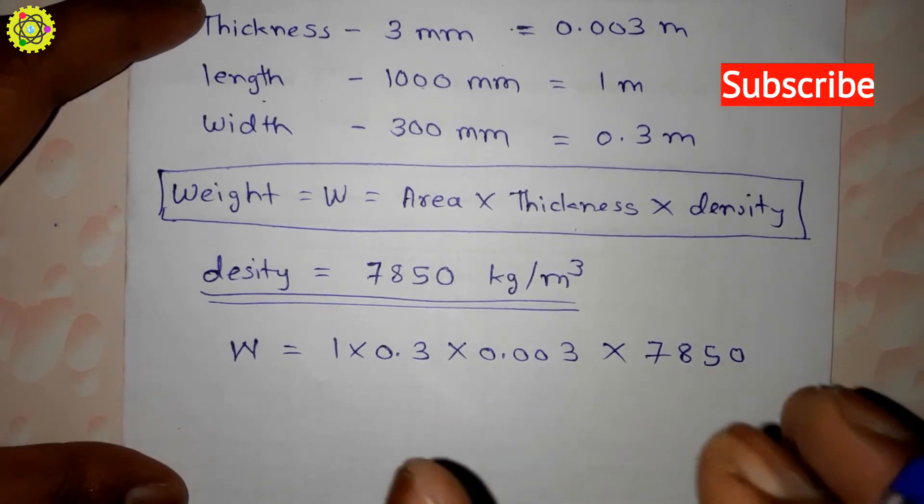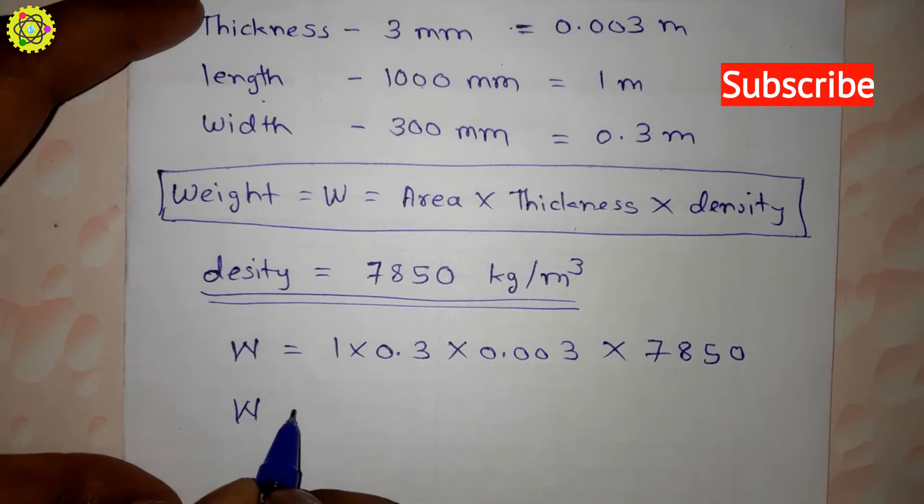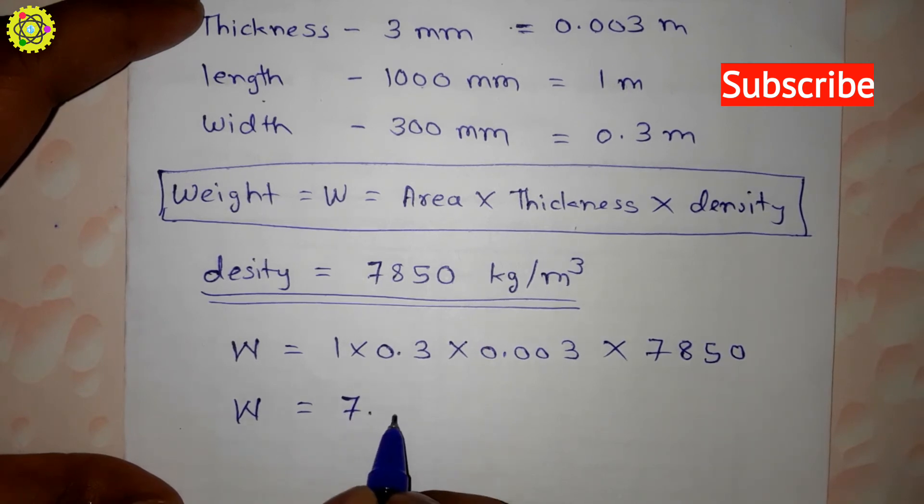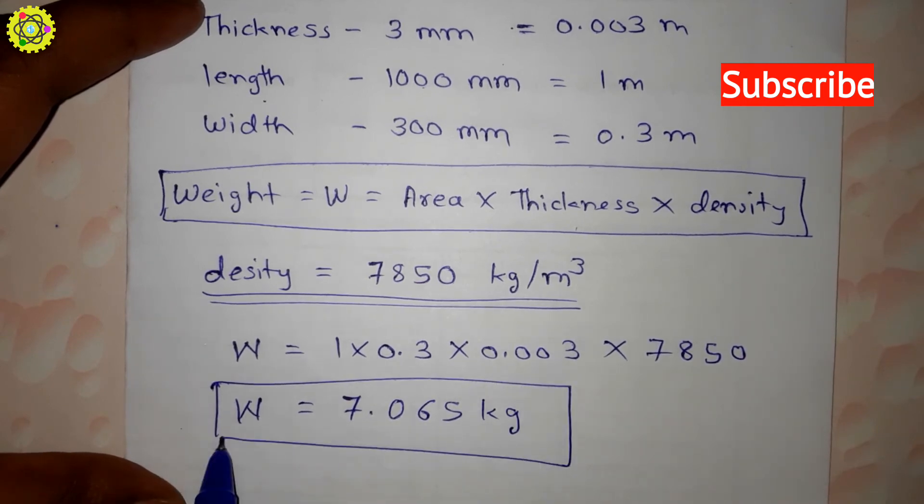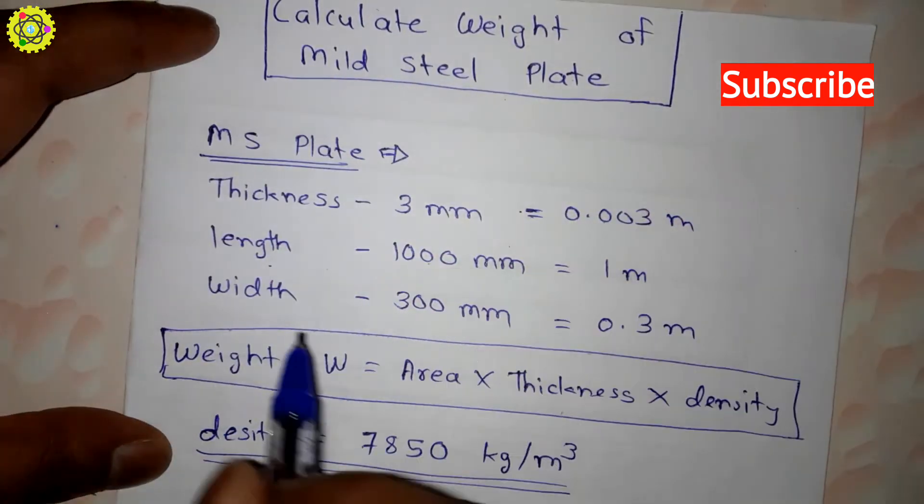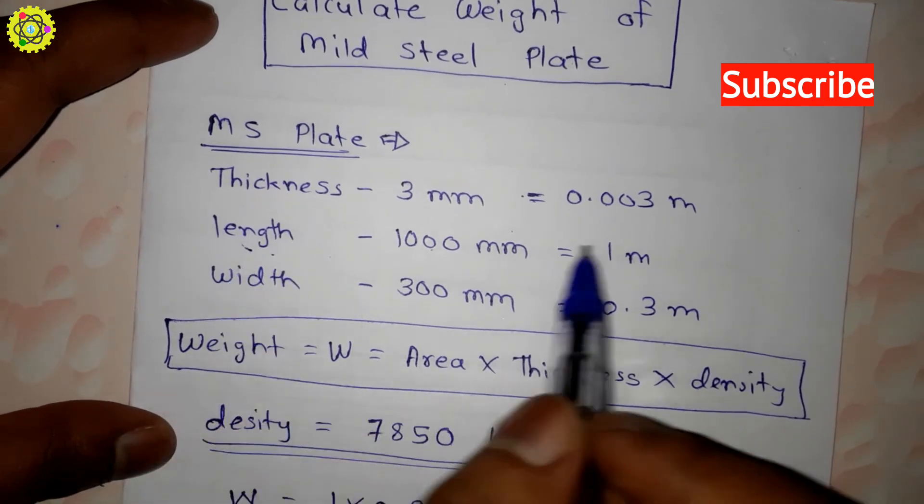After calculating, weight W is equal to 7.065 kg. This is the weight of this MS plate having the thickness, length, and width as given here.